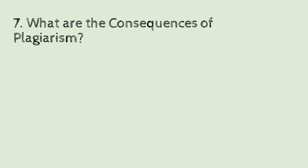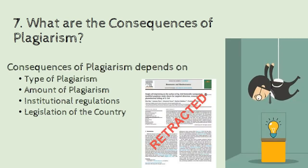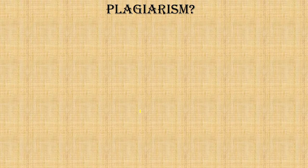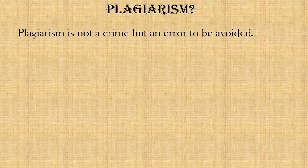The last question: what are the consequences of plagiarism? The consequences depend on the type of plagiarism, the amount of plagiarism, institutional regulations, and the legislation of the country. If a journal finds that your article is plagiarized, they will retract it. Institutional regulations may demand the loss of your job, and legislation of the country may demand imprisonment and a fine.